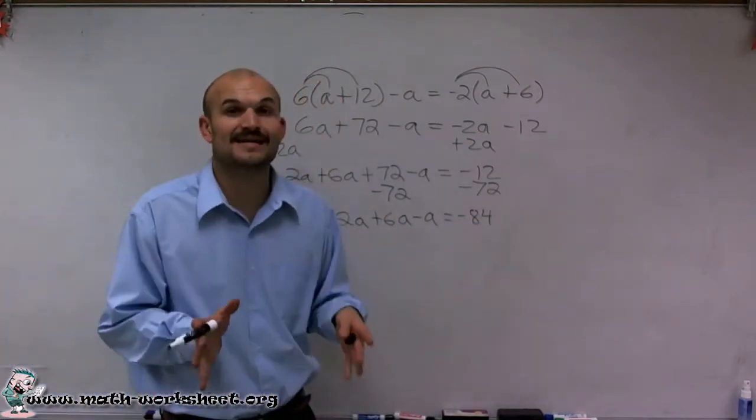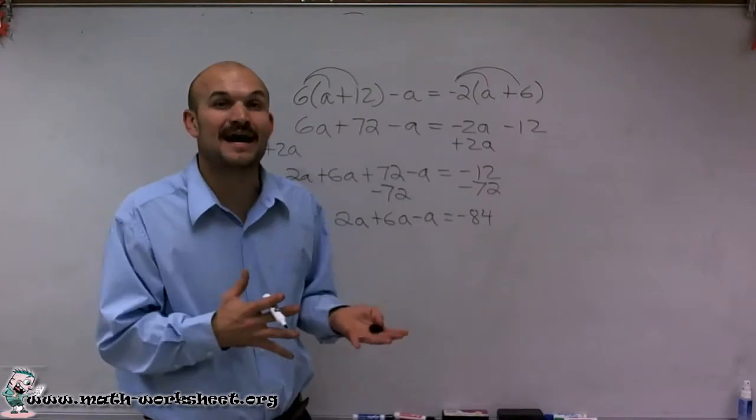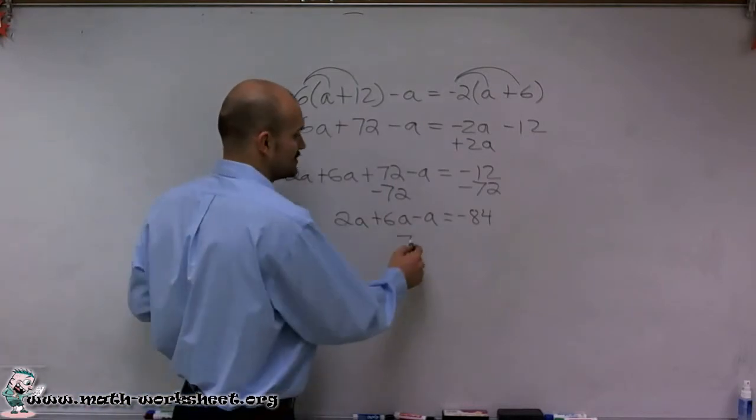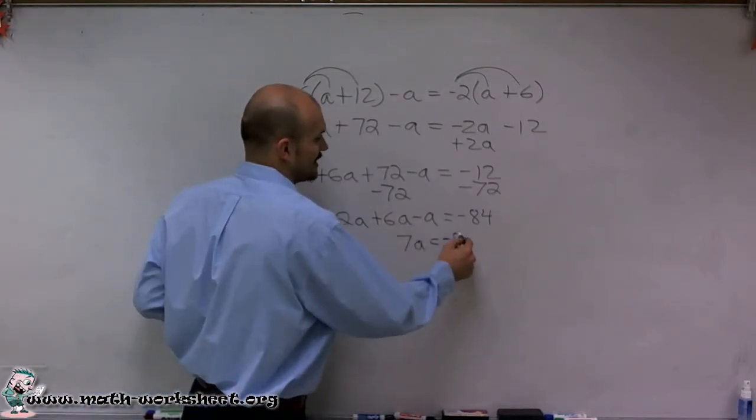Now I have all the variables on the same side. It's very easy for me to just combine them all together. 2a plus 6a is 8a minus a is going to be 7a equals a negative 84.